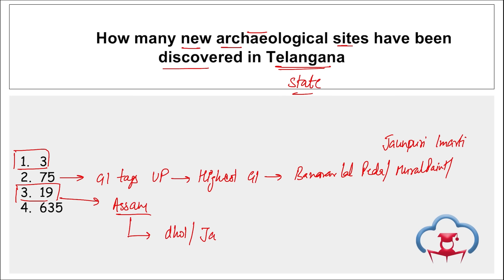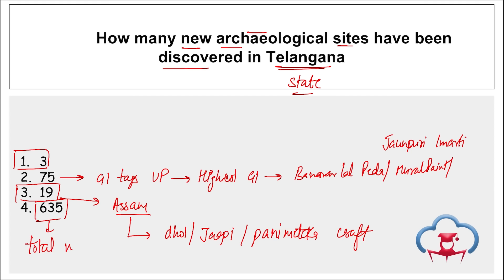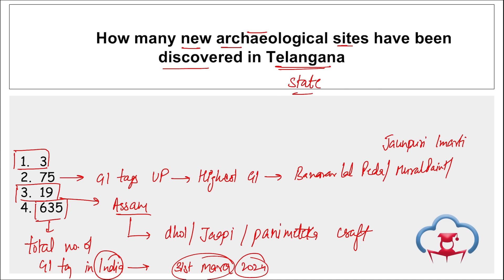Some of the products that got GI tags from Assam include Assamese Dhol, Japi, and Paani Matka Craft. The total number of products that have received GI tags in India is 635, last updated on 31st March 2024.